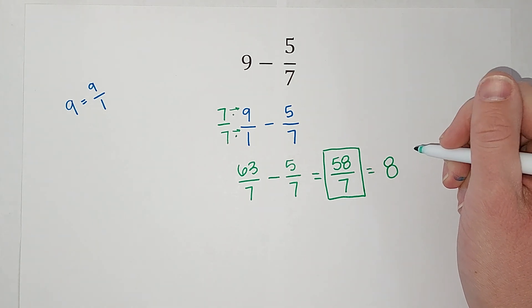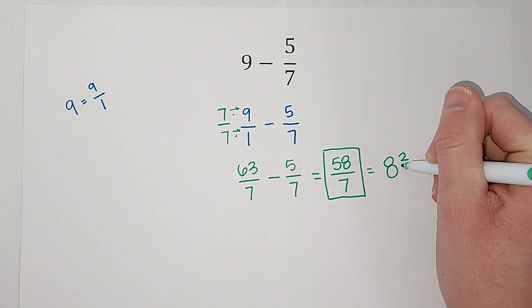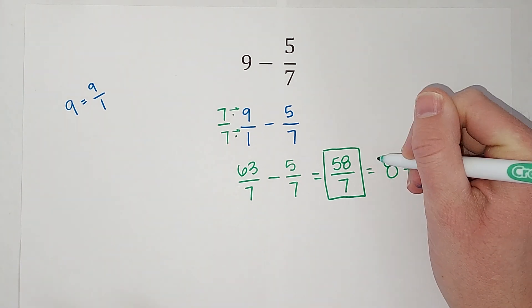7 times 8 gives me 56, so I have 2 left over, and my denominator stays 7.